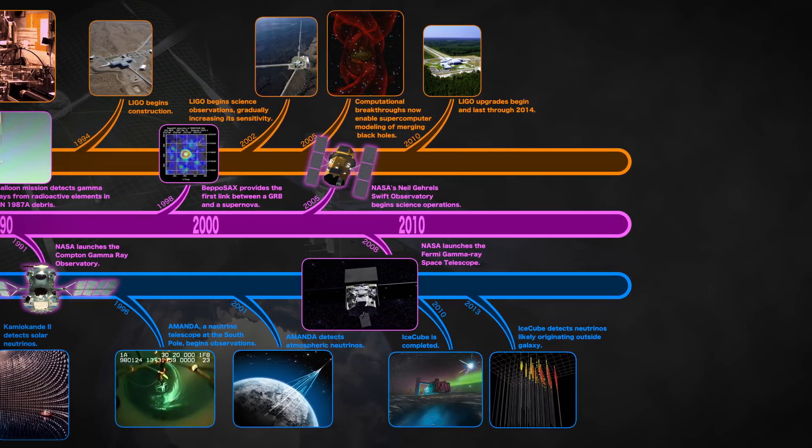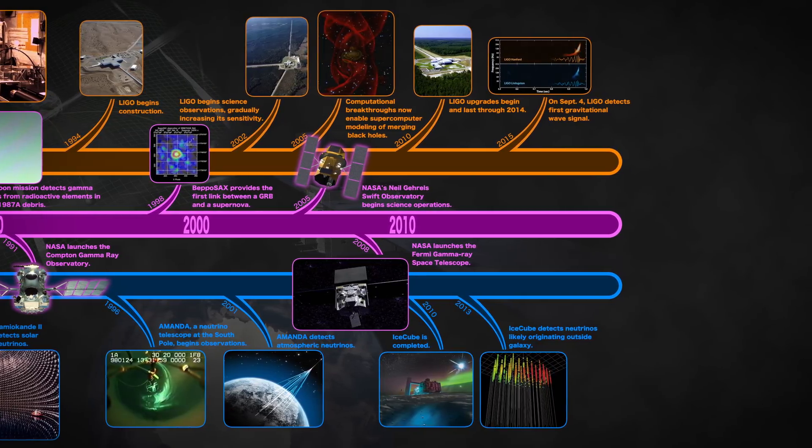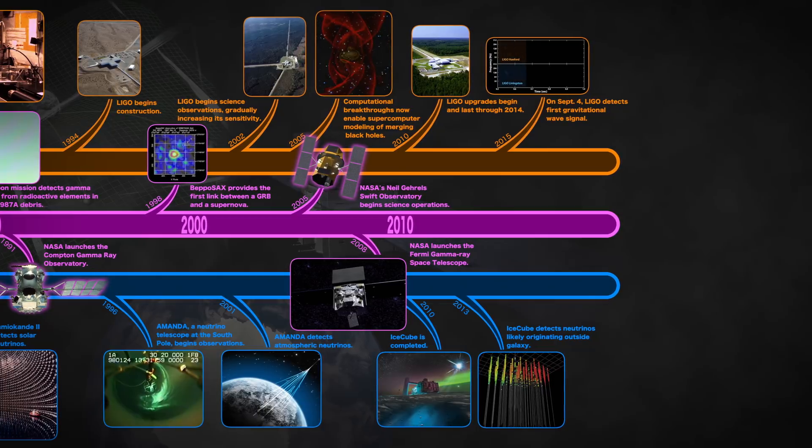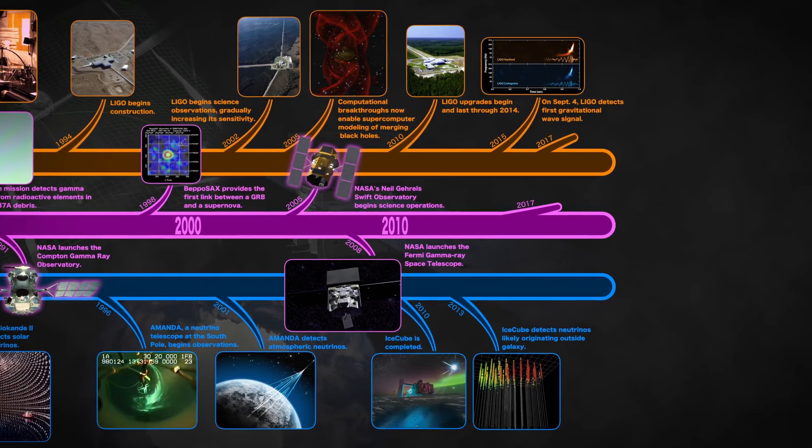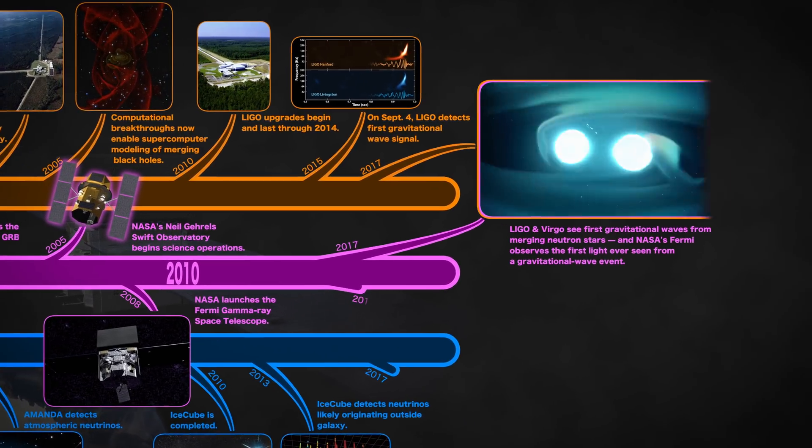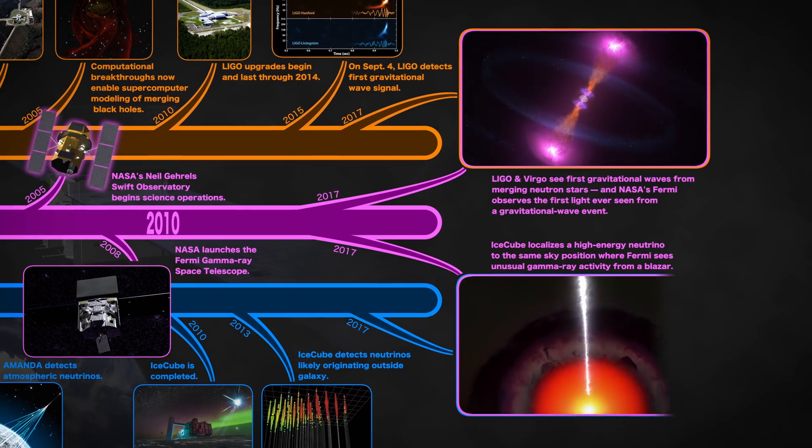In 2015, the upgraded LIGO saw the first gravitational waves, the source merging black holes over a billion light-years away. And in 2017, gamma ray counterparts accompanied both a gravitational wave event and a cosmic neutrino source.